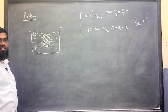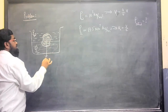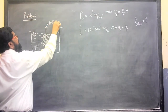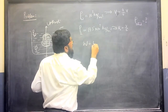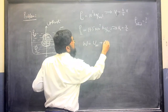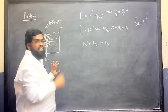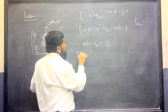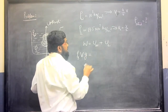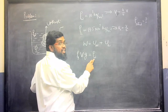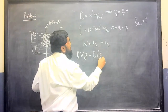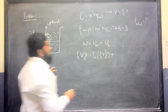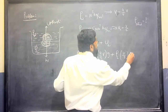If we consider the upthrust, weight is balanced with the upthrust. Weight is balanced with the upthrust due to water plus upthrust due to the liquid. So: density of solid × volume of solid × G equals density of water × (4/5)V × G plus density of the liquid × (1/5)V × G.